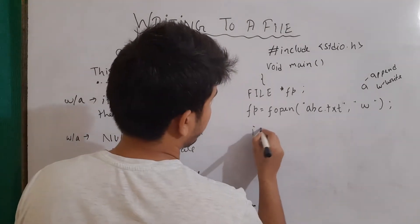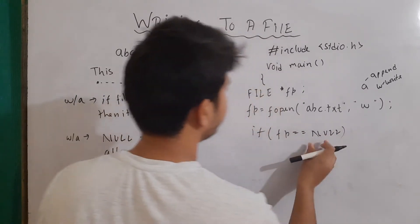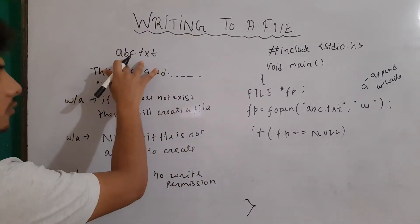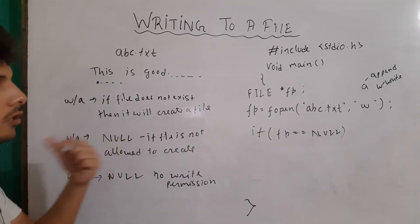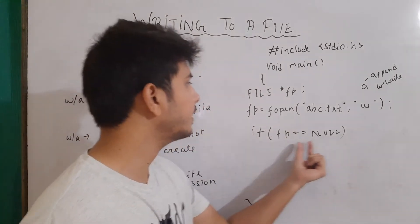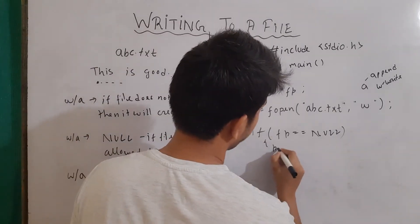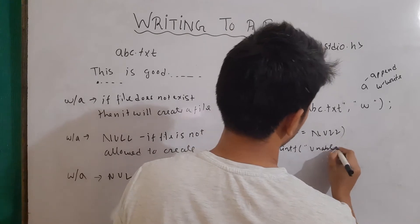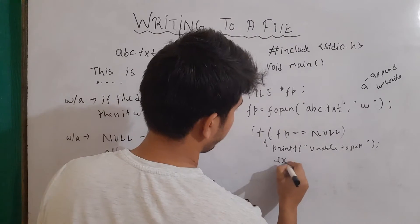Now, first of all, I'll check if fp is equal to null. fp will be equal to null when I don't have the permission to write the content to this file, or the file does not exist and we don't have permission to create a file. There could be other reasons also, but this is the basic reason. In that case, I can write here printf 'unable to open' and I will exit my program using the exit function.